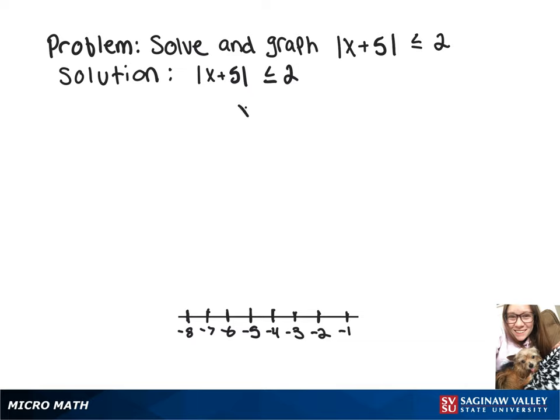So what that means is we have x plus 5 is less than or equal to 2, and it's greater than or equal to negative 2.